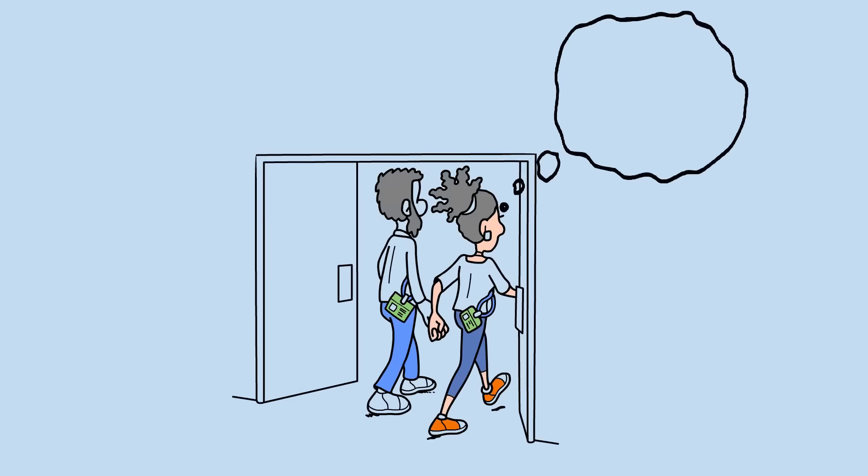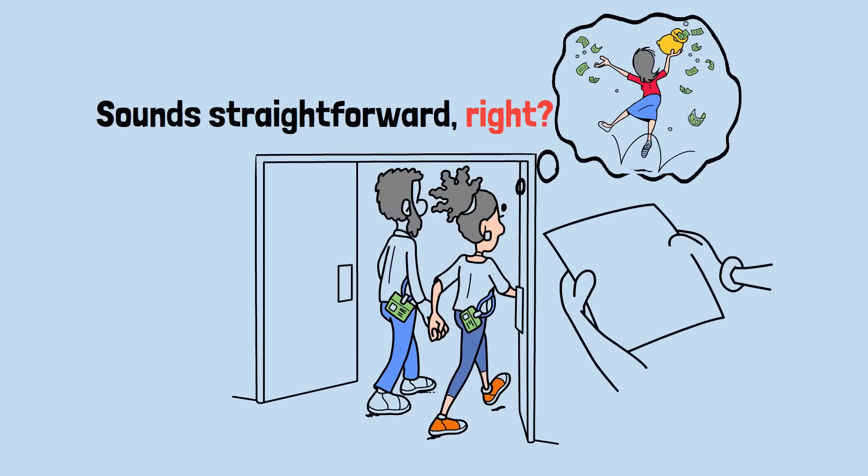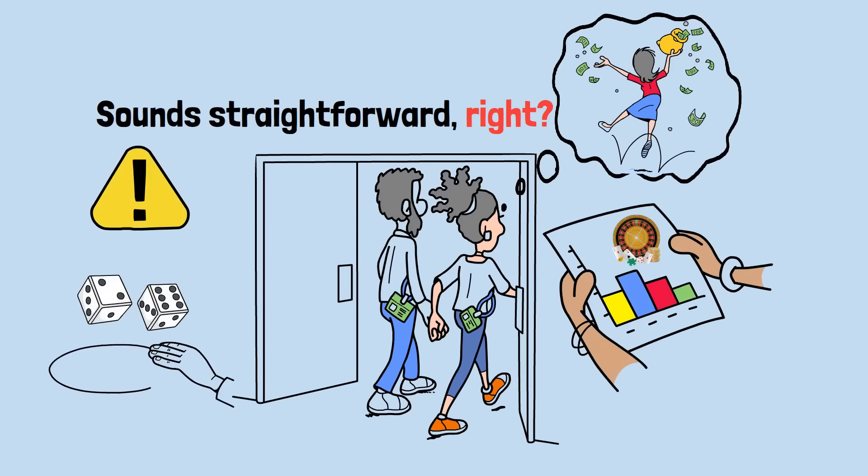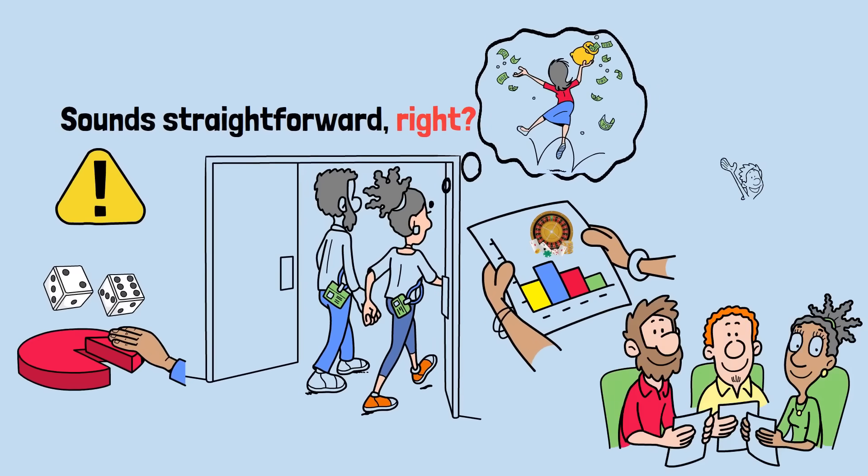Imagine walking into a casino with a simple goal: win exactly $100 and walk away. Sounds straightforward, right? But here's where mathematics reveals something counterintuitive about gambling that challenges our basic understanding of risk, probability, and rational decision-making. Let me introduce you to three very different gamblers, each with the same goal but vastly different approaches.